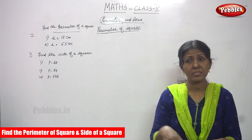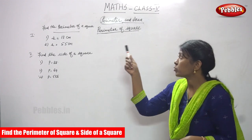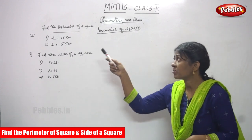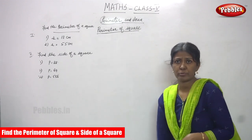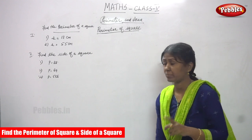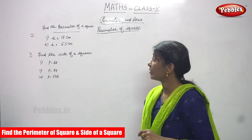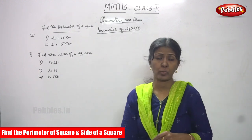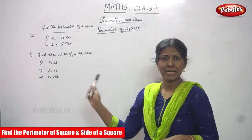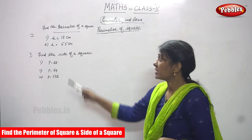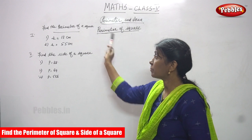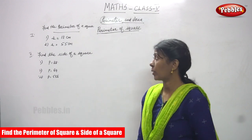Now we are going to do the sums on perimeter of the square. That means find the perimeter of the square. First subdivision is find the perimeter of a square, and the second subdivision is find the side of the square. Let's start the sum. First subdivision: find the perimeter of a square.